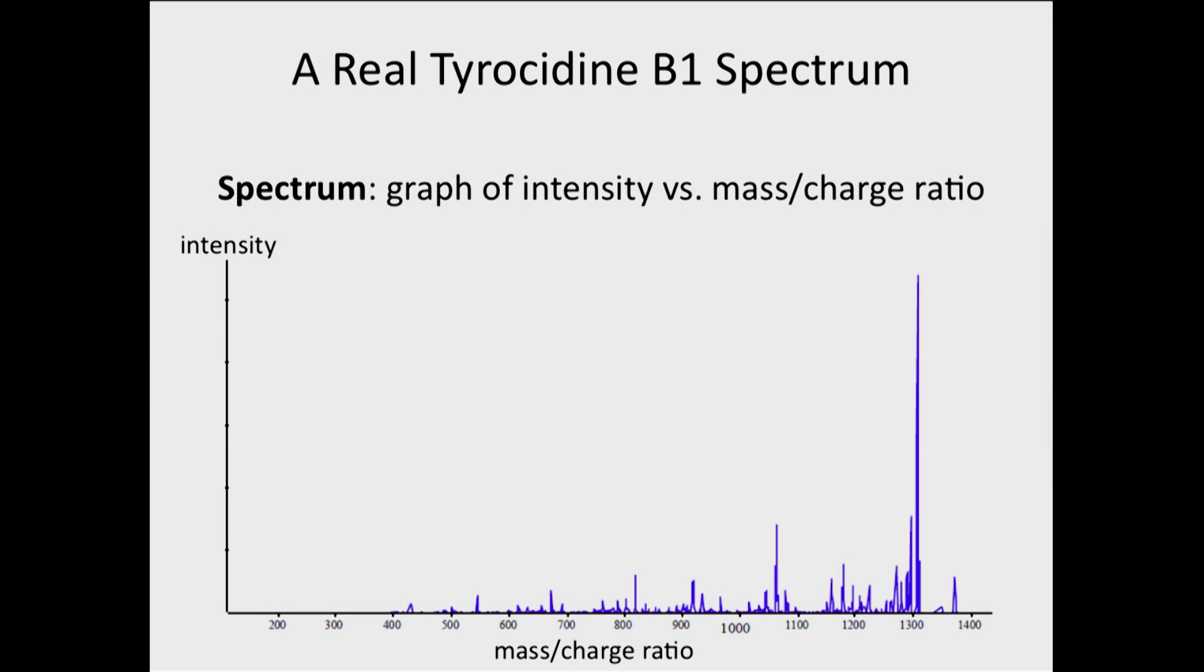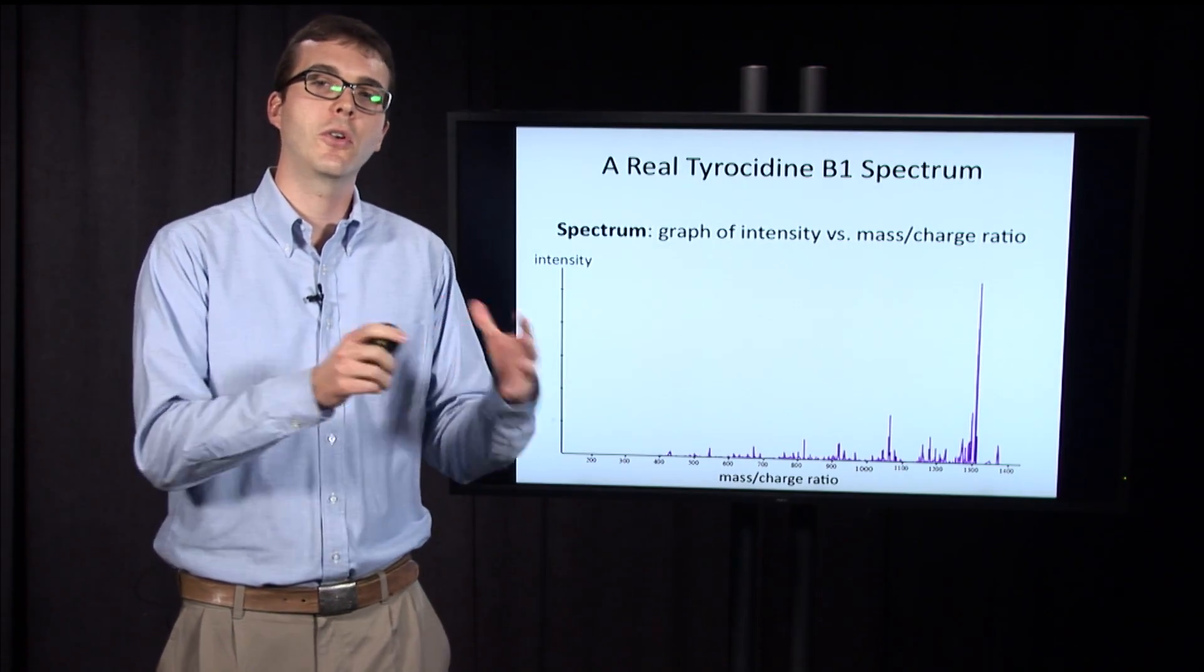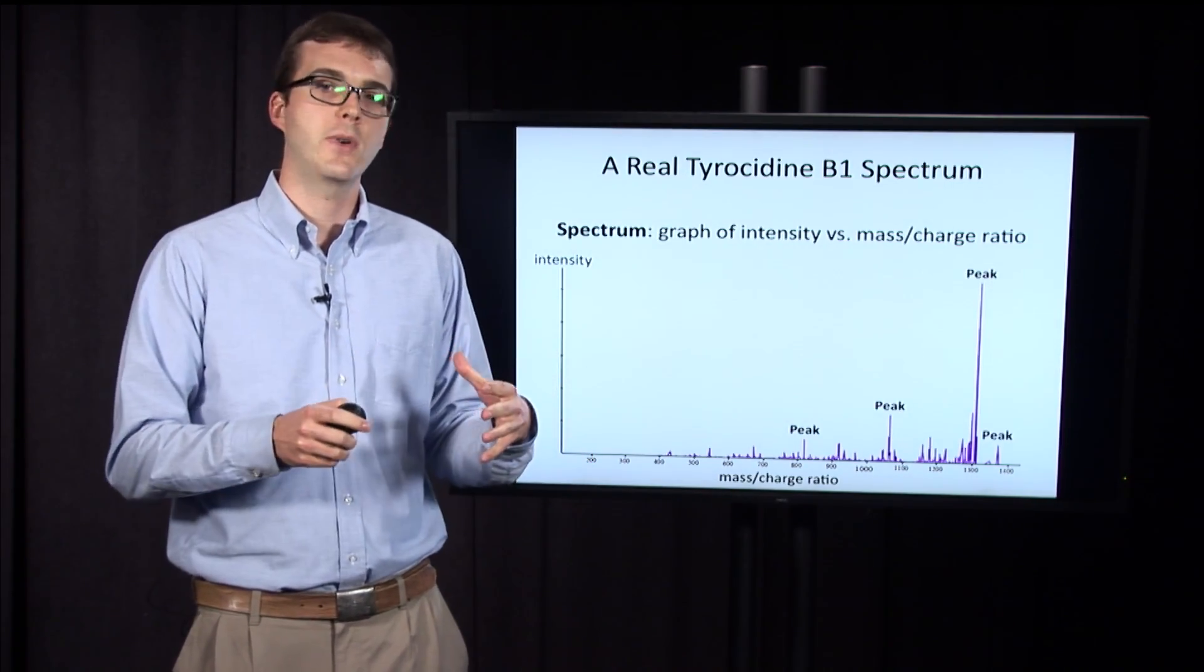So it's detecting the number, give or take, the number of ions at each mass charge ratio value. And from this, we somehow need to convert it into mass. All we have is mass charge ratio.